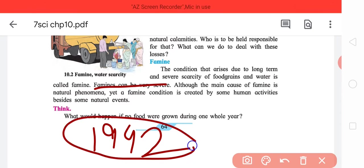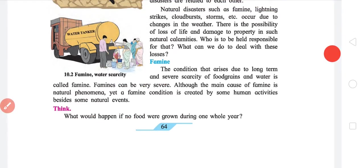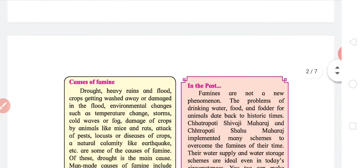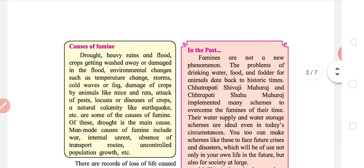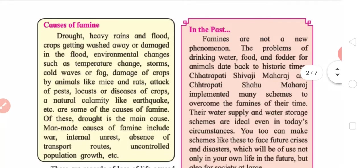For India, this particular famine is the most severe one in all records. Although the main cause of famine is natural phenomenon, yet a famine is created by some human activities. I just gave you how the Britishers caused Bengal famine of 1942. Now come causes of famines, the natural ones.